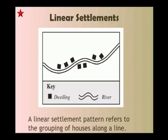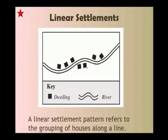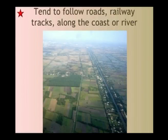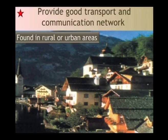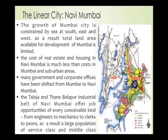The next pattern is linear settlements. A linear settlement pattern refers to the grouping of houses along a line. Here in this diagram the line is a river, but it needn't be a river — it could be a railway line, any other water body, a communication line, or a highway. Anything that supports these dwelling units along that main spine of the settlement is a linear settlement. This is found in both rural and urban areas because it provides good transport and communication network. An example of a linear city is Navi Mumbai, which has obviously grown along a particular spine, and many government and corporate offices have shifted from Bombay to Mumbai because of that reason.